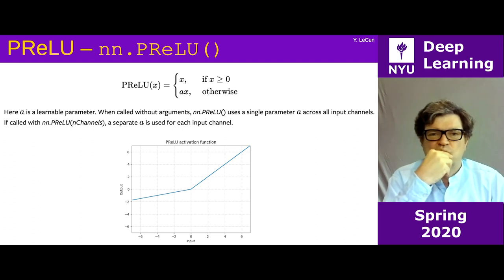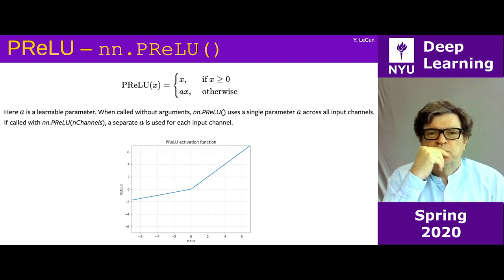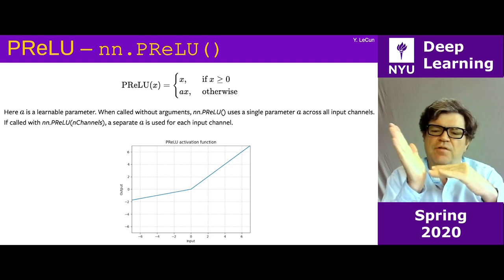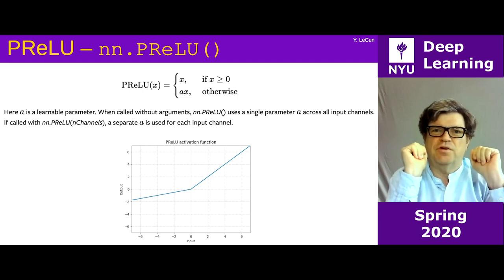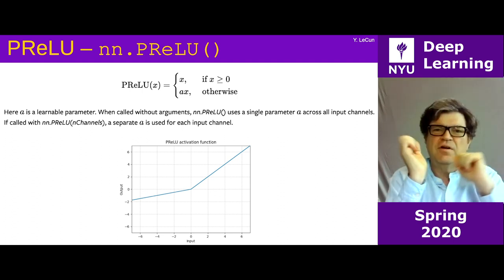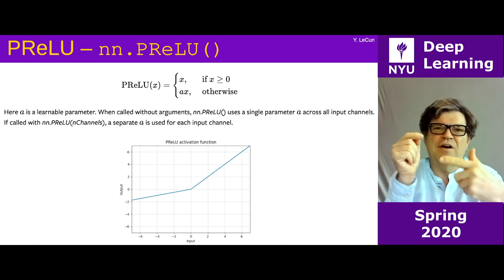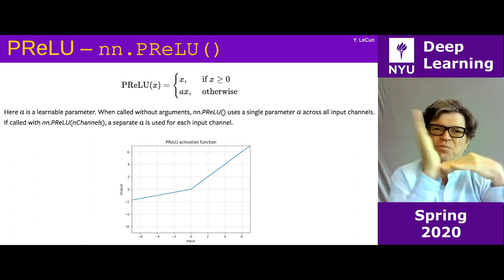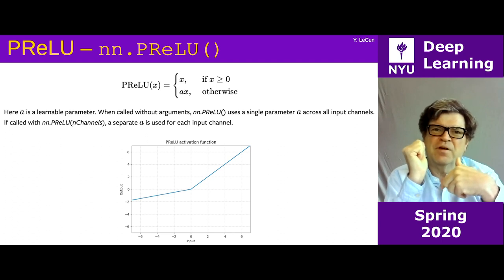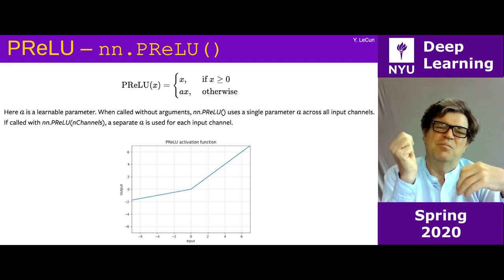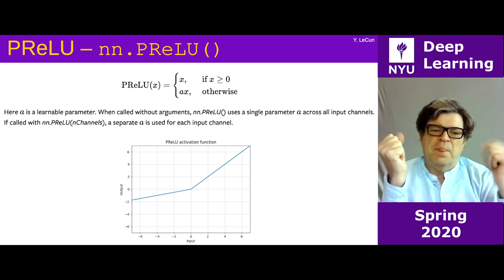A student asks for a general rule for preferring kink versus smooth non-linearities. It comes down to scale equivalence. With a hard kink, multiplying the input by two multiplies the output by two, otherwise unchanged. With a smooth transition, multiplying the input by 100 makes the function look like it has a hard kink because the smooth part shrinks by a factor of 100; dividing by 100 makes it very smooth. This changes behavior depending on input scale.